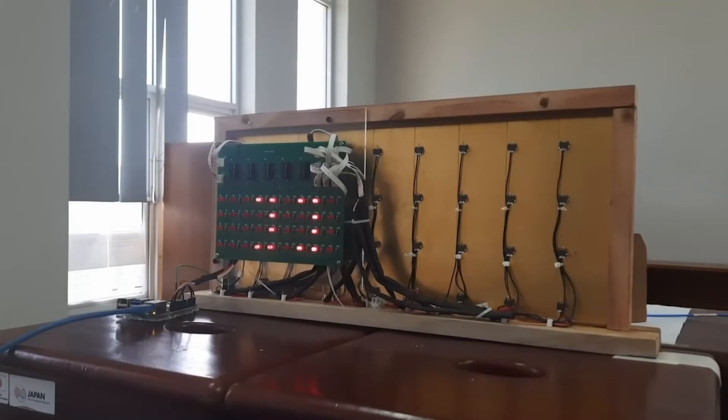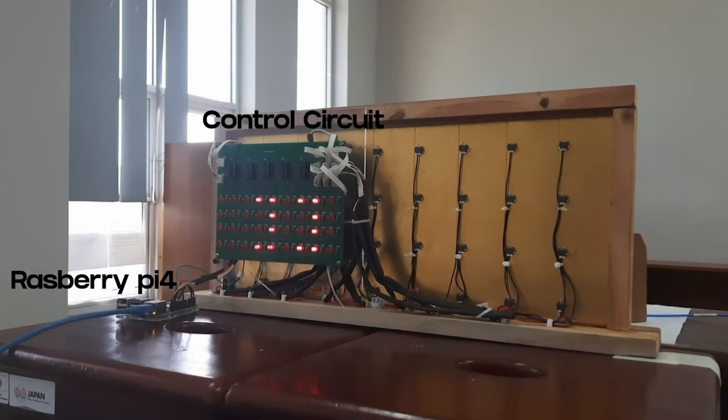As said earlier, this is a 1-bit IRS. So in each unit cell, there are two states called on and off states. To get the two states, we must send the control signal to all the unit cells separately. For that, we use Raspberry Pi. On the control circuit, there is a LED panel to indicate the on and off state of all the unit cells.